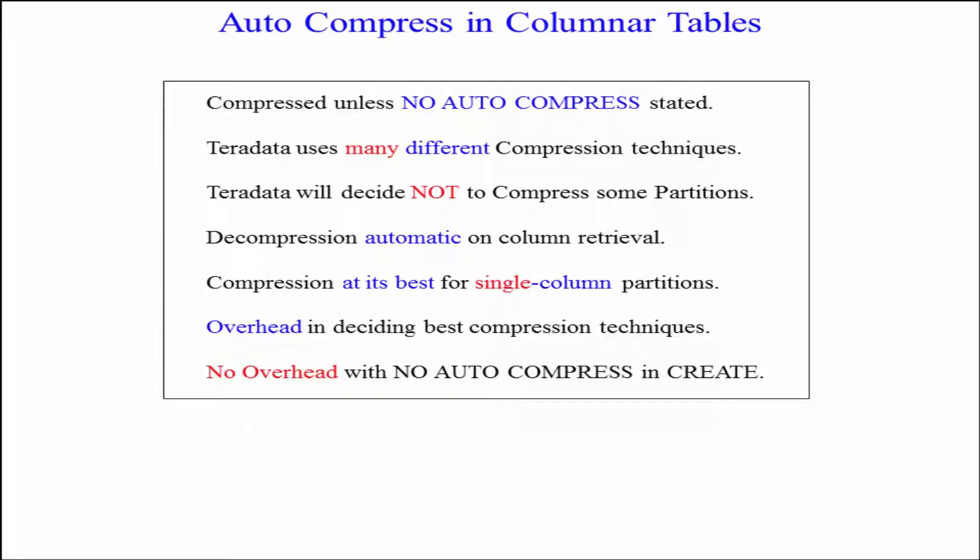Teradata uses many different compression techniques and will decide not to compress some partitions. Decompression is automatic when columns are retrieved. Compression is at its best for single column partitions. There is overhead in deciding the best compression technique, but there's no overhead when you specify no auto compress in the create statement.